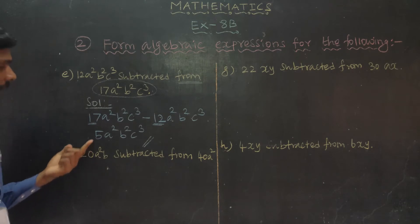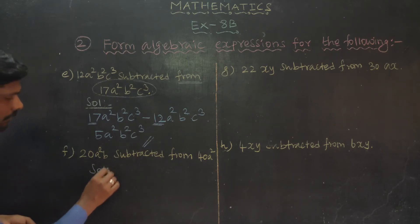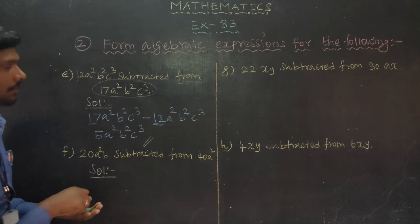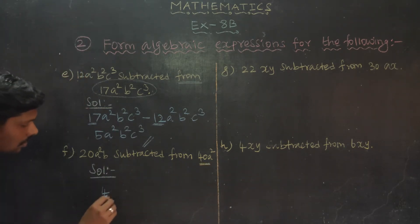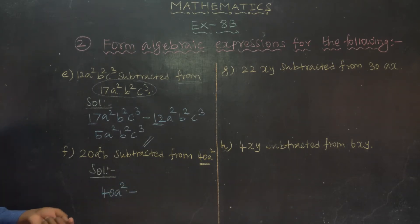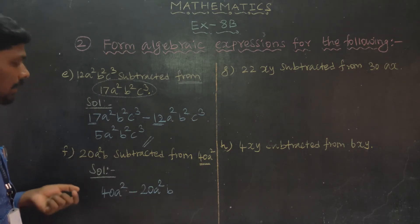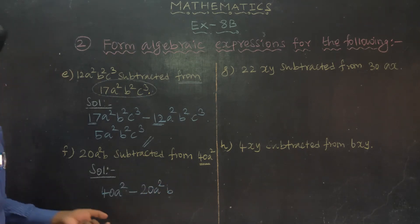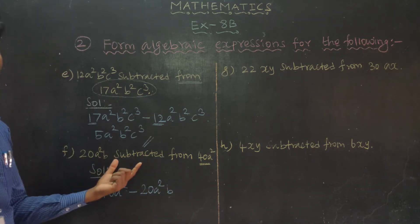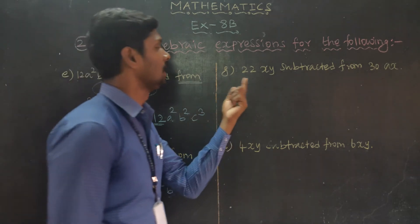Part F: 20 a squared b subtracted from 40 a squared. These are unlike terms — 40 a squared minus 20 a squared b.